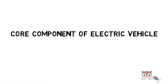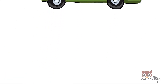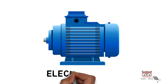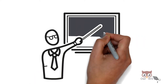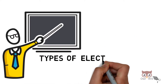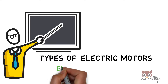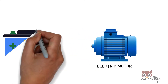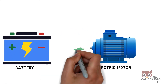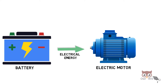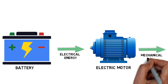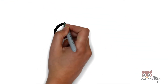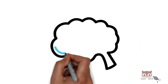One of the core components of electric vehicles, which comes after the batteries, is the electric motor which drives the wheels. An electric motor converts electrical energy from the battery to mechanical energy, which can be used to drive the wheels in electric vehicles. Let us understand the major types which are used.